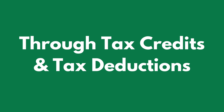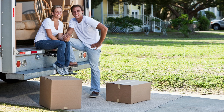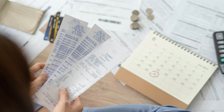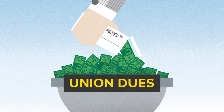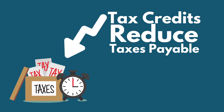How to reduce the amount of taxes you pay: through tax credits and tax deductions. Tax deductions reduce your taxable income, and some of these include moving expenses, employment expenses, annual professional or union dues, and RRSP deductions.